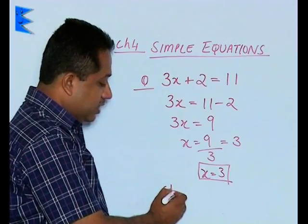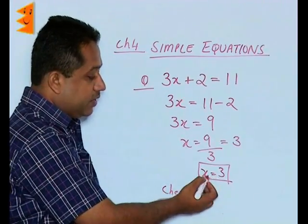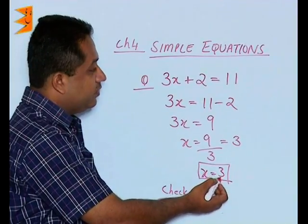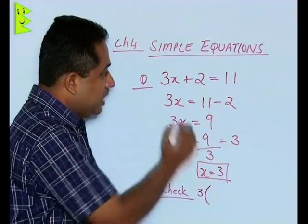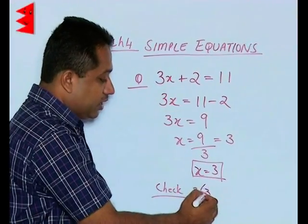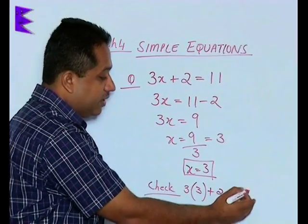Now we can check whether our solution is correct. How are we going to check it? We substitute the value x = 3 back into the equation. The equation becomes 3(3) + 2, which has to give us 11.